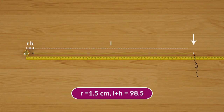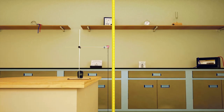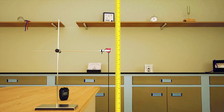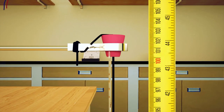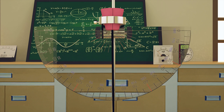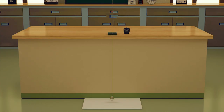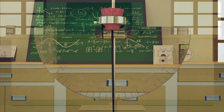Measure this distance from the bob and mark it on the thread. Pass the free end of the thread through a split cork such that the 100 centimeters marking is just at the bottom of the cork. Clamp the cork firmly to a heavy iron stand placed on a horizontal table. Make sure that the pendulum bob can move freely.